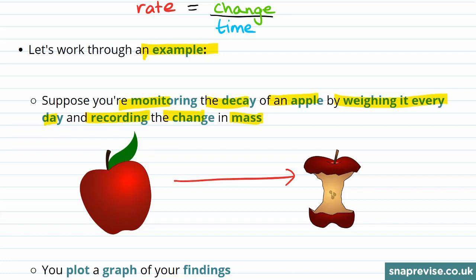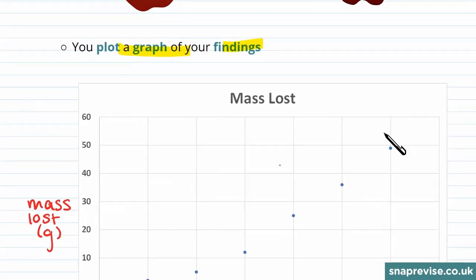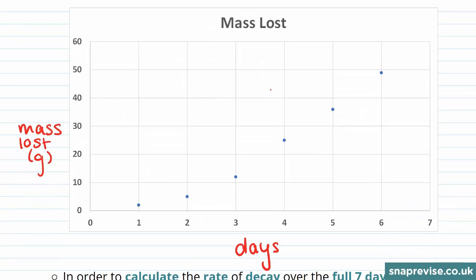Then you plot a graph of your findings. As you can see, the mass loss increases over a number of days. You can draw a line through these points.